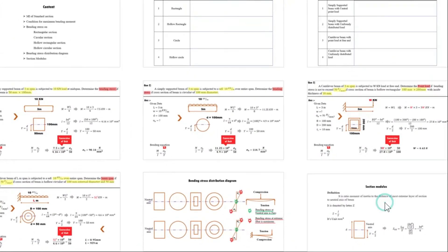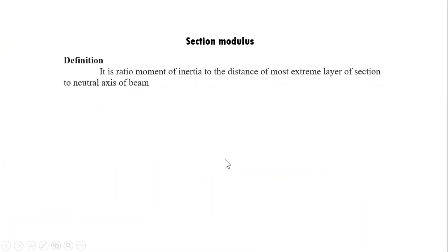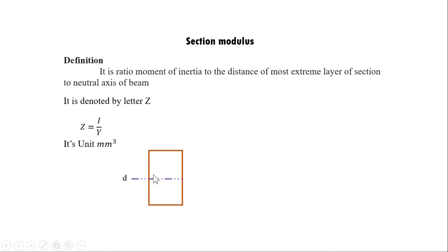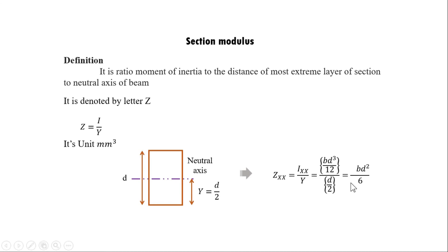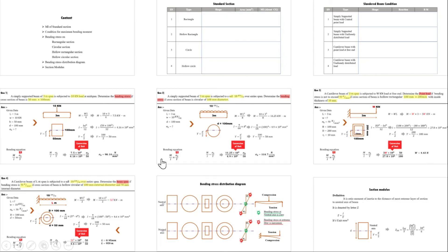Section modulus Z is defined as the ratio of moment of inertia to the distance of the extreme layer from the neutral axis: Z = I/y. For a rectangular section of depth d, simplifying gives Z_x = bd²/6. This session covered standard section properties, four bending stress problems, bending stress distribution, and section modulus.